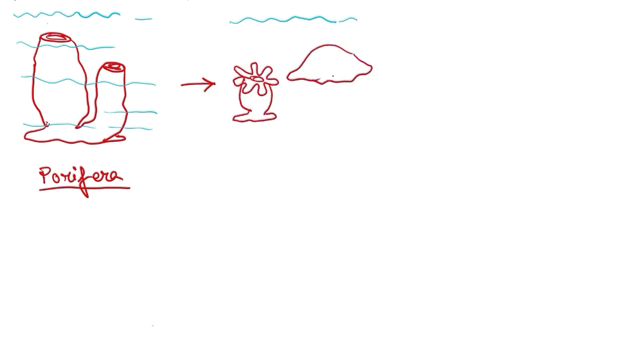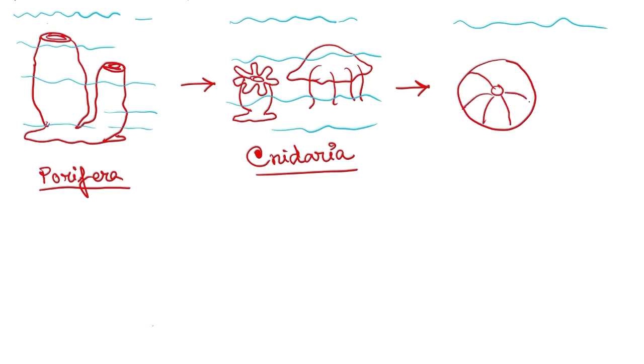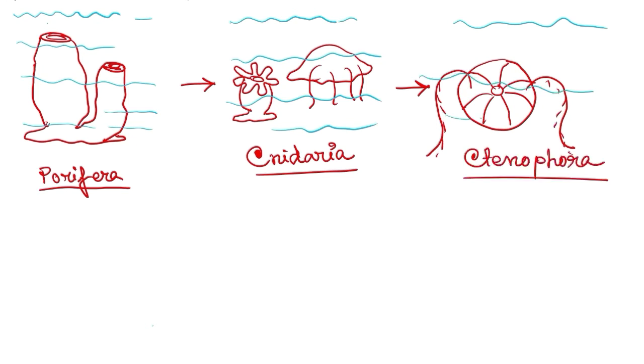The next phylum after Porifera is Cnidaria. They are also formed under water. Some of these cnidarians can move such as jellyfish. The third phylum of Animal Kingdom is Ctenophora. These are also found under water. Cnidaria and Ctenophora, both of them are little more developed than Porifera.